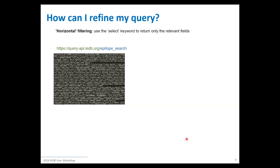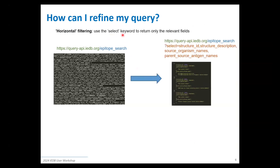When working with these queries, there are a couple of different ways to refine them. The first is horizontal filtering, which is the select keyword — it only returns the relevant fields you'd like. It's the same as limiting which fields you want to return in a database query. Here you can see we're selecting the structure ID, description, source organism name, and parent antigen names — this is that pared-down example from earlier.